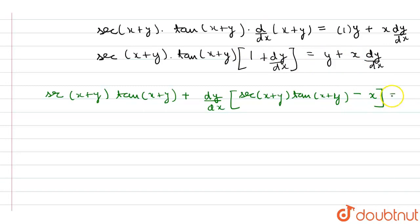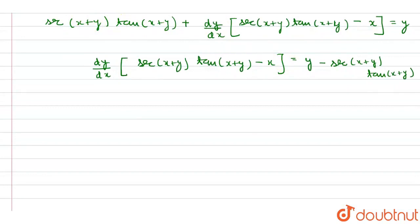So dy by dx times sec of x plus y times tan of x plus y minus x equals y. Now taking this term on this side, it will be minus sec of x plus y times tan of x plus y. So dy by dx will be equal to...